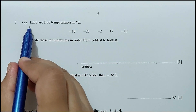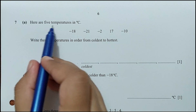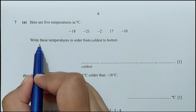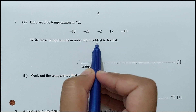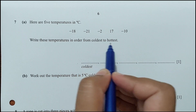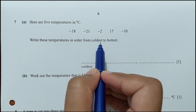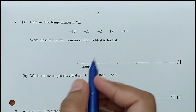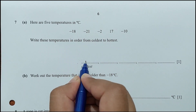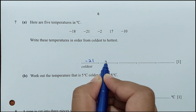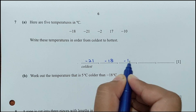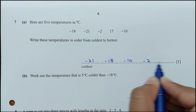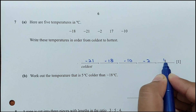Question 7 part A: here are 5 temperatures in degrees Celsius. Write them in order from coldest to hottest. The coldest temperature is the most negative: −21, then −18, −10, −2, and the hottest is 17 degrees.